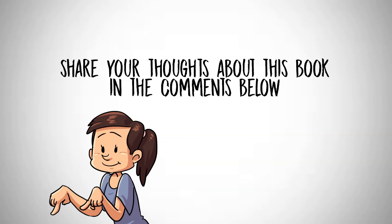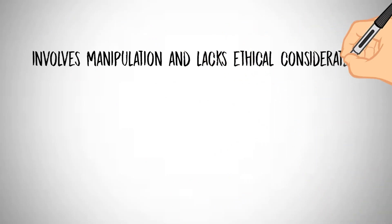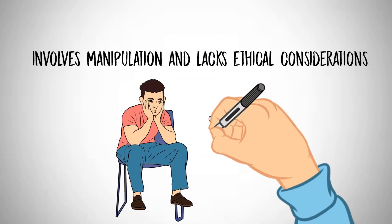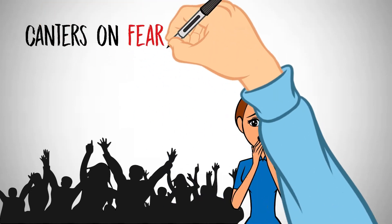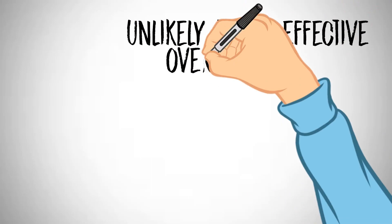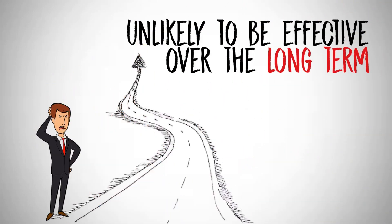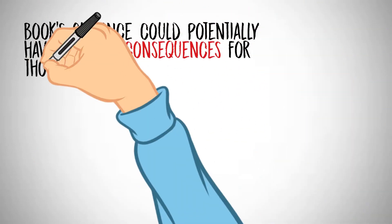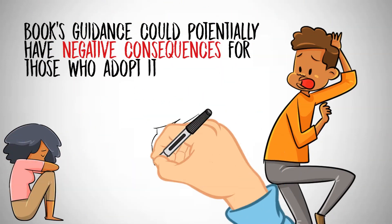Here are some of the specific reasons why the book could be considered controversial. One, the counsel provided in the book often involves manipulation and lacks ethical considerations. Two, the book's perspective on the world centers on fear, deceit, and taking advantage of others. Three, the recommendations given in the book are unlikely to be effective over the long term.